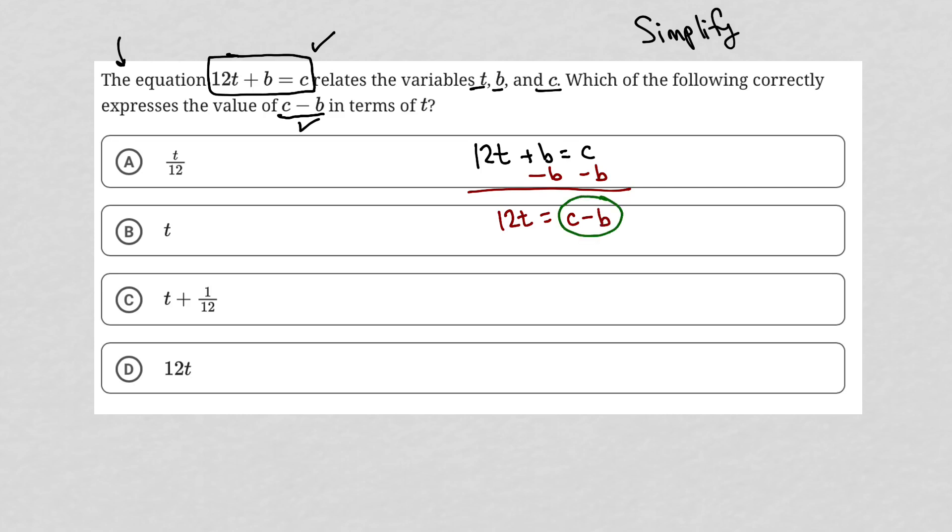Right? So c minus b is equal to 12t and therefore the correct answer is choice d.